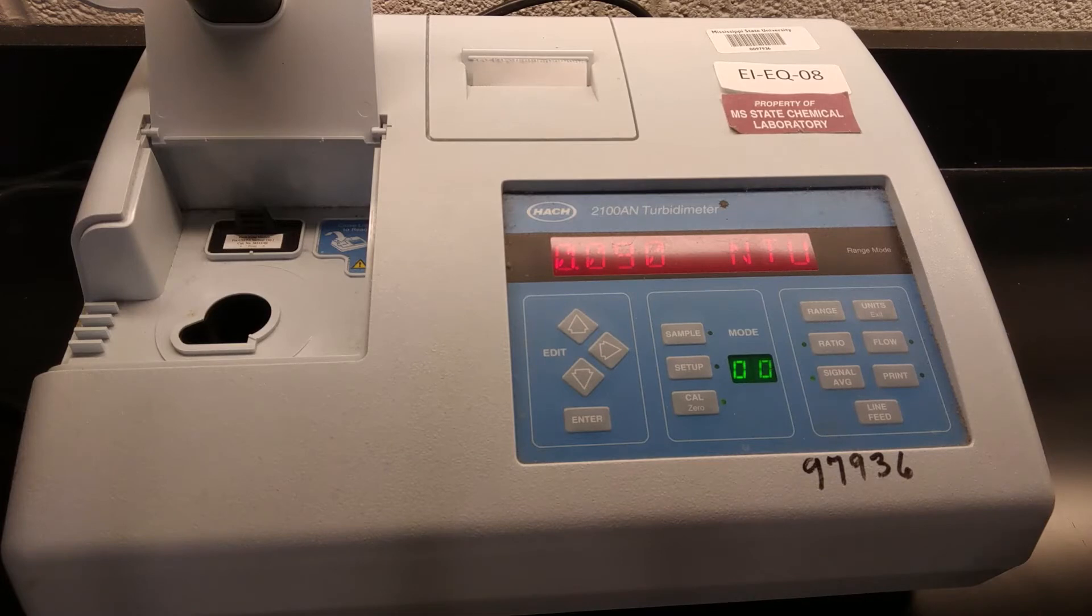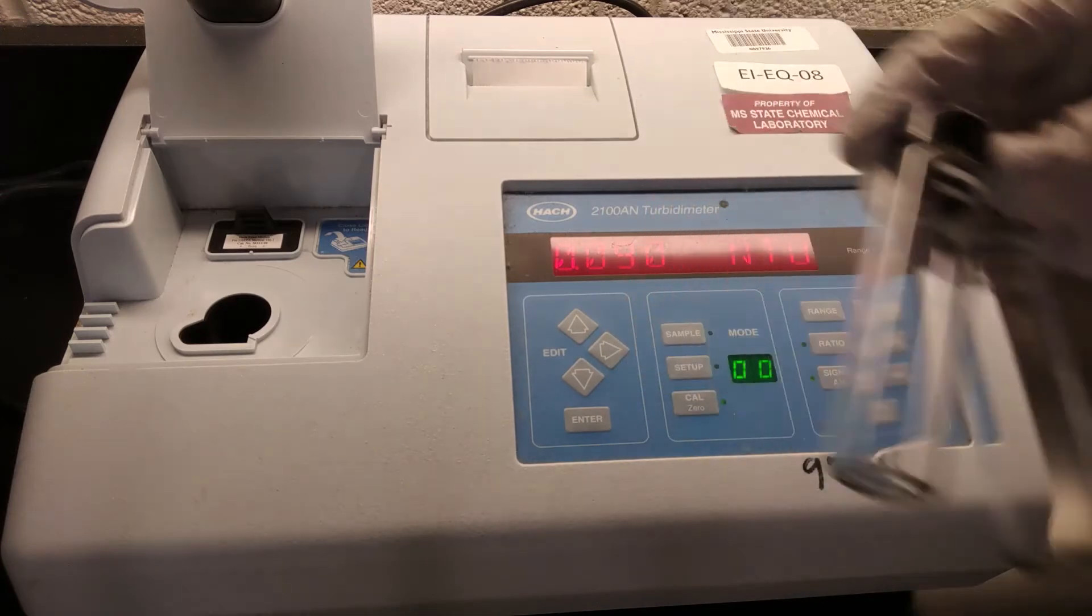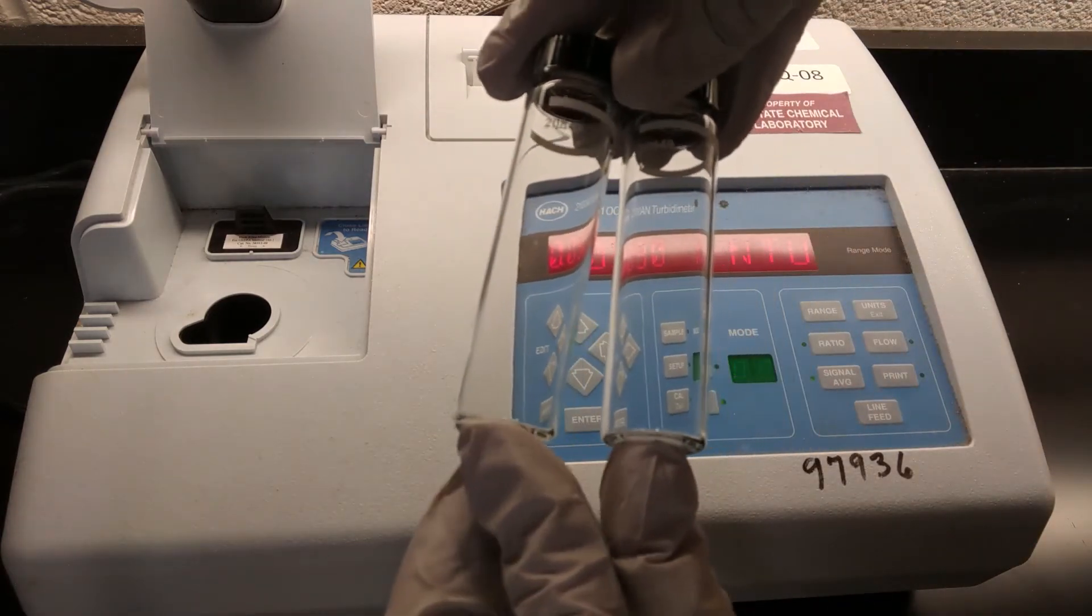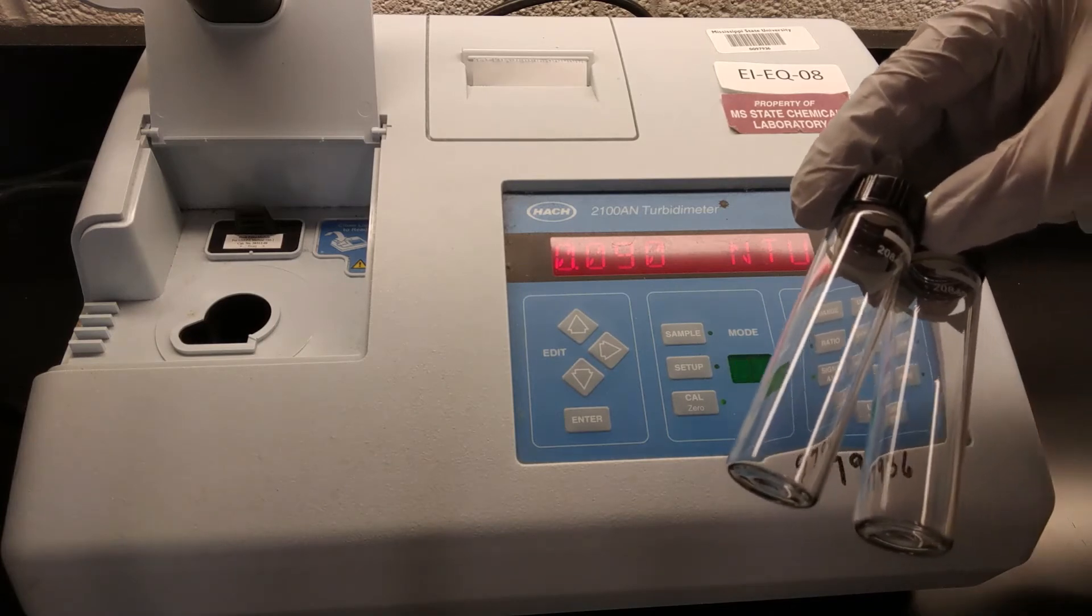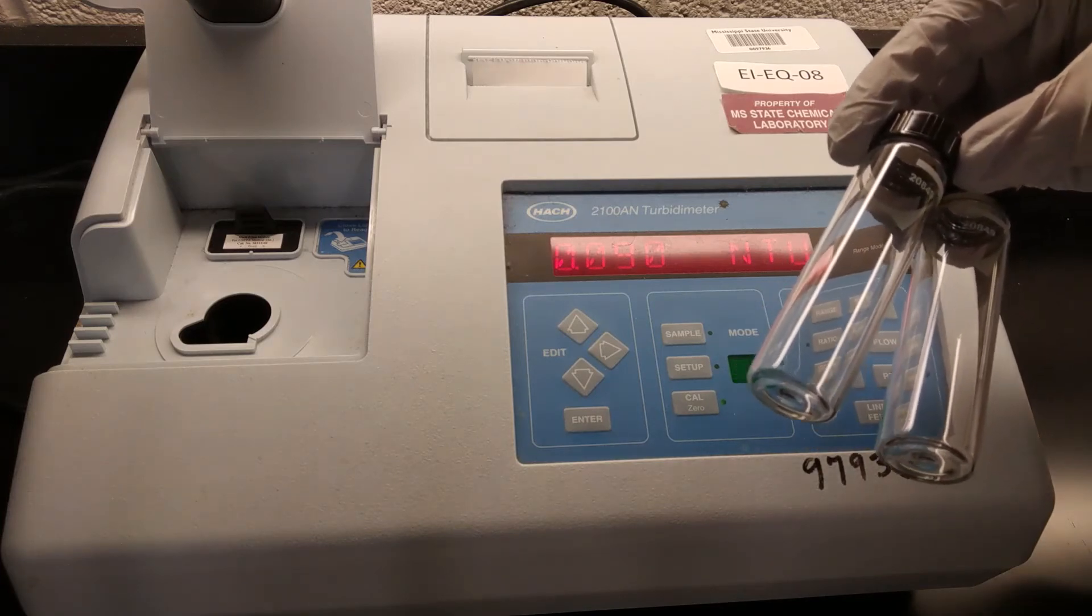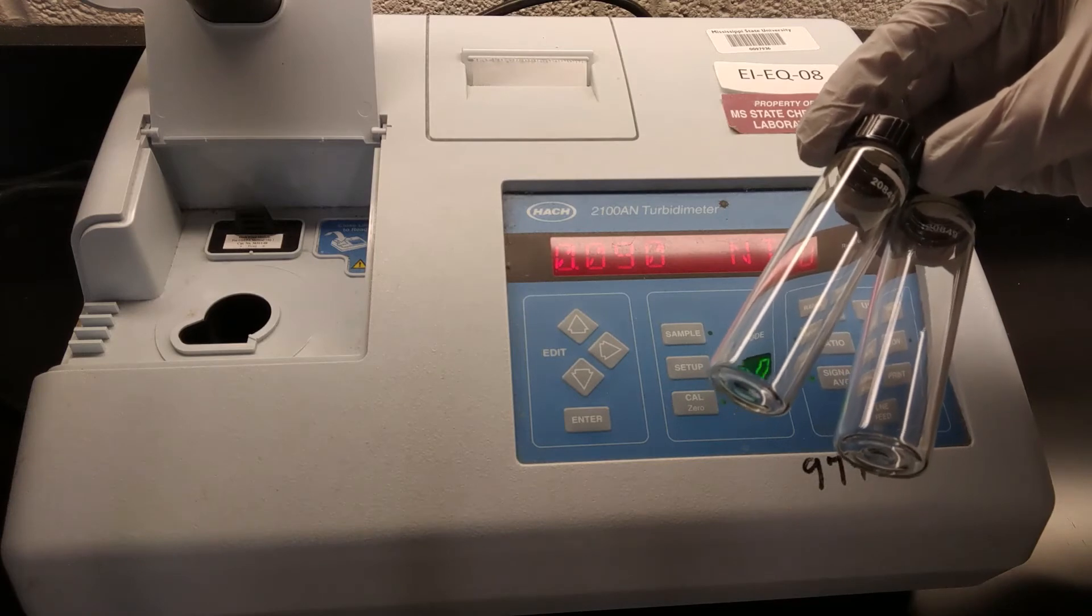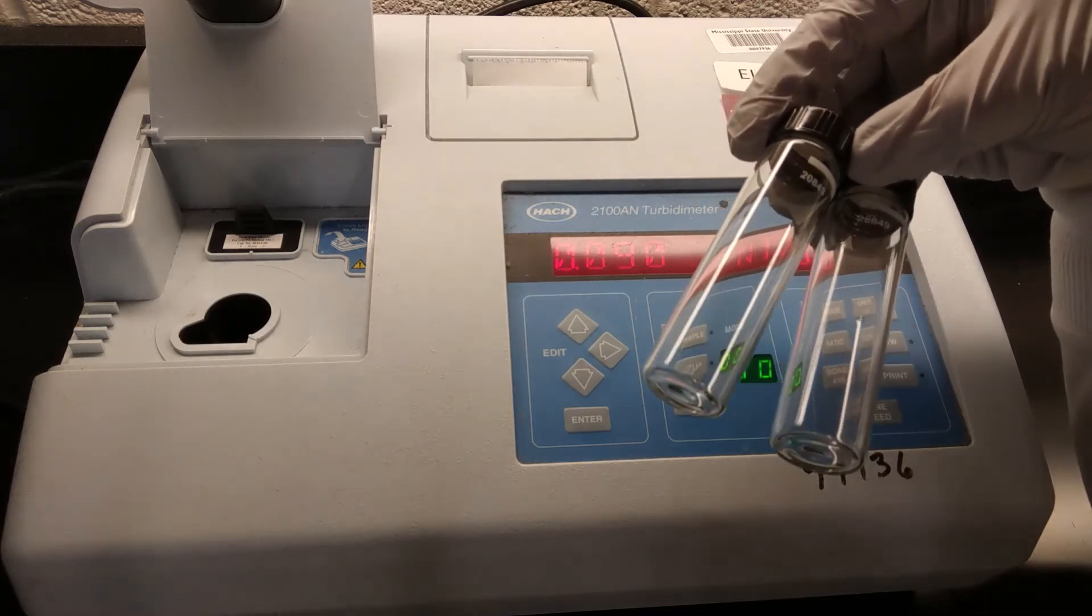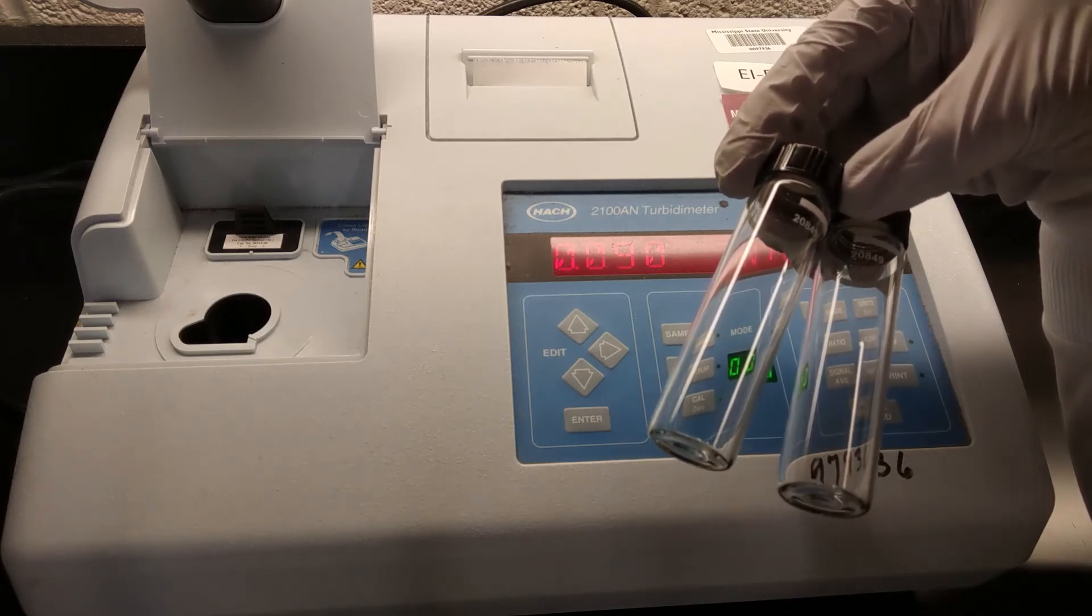So now we are ready to do our analysis and take some measurements. Before we do that, we are going to put our sample and a blank into some of these cells. You might be able to tell, but on these cells there are numbers 20849 and it's the same on both of them. What that means is that these are matched cells. And so they should have similar, if not identical optical properties so that we can accurately compare two different samples to each other knowing that the glass itself is not going to interfere with that comparison.